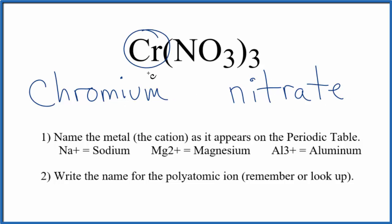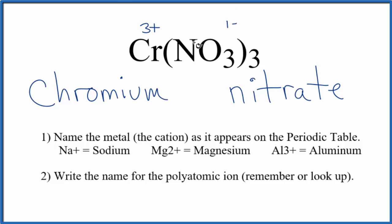But chromium is a transition metal, which means it can have different ionic charges depending on what it's bonded to. Here it's bonded to the nitrate ion, and the whole nitrate ion has a charge of 1 minus. Since we have three of these, 3 times 1 minus is 3 minus. So chromium has to be 3 plus for all the charges to add up to a net charge of 0. For that 3 plus charge on chromium, we need to write Roman numeral III in parentheses between the chromium and the nitrate.